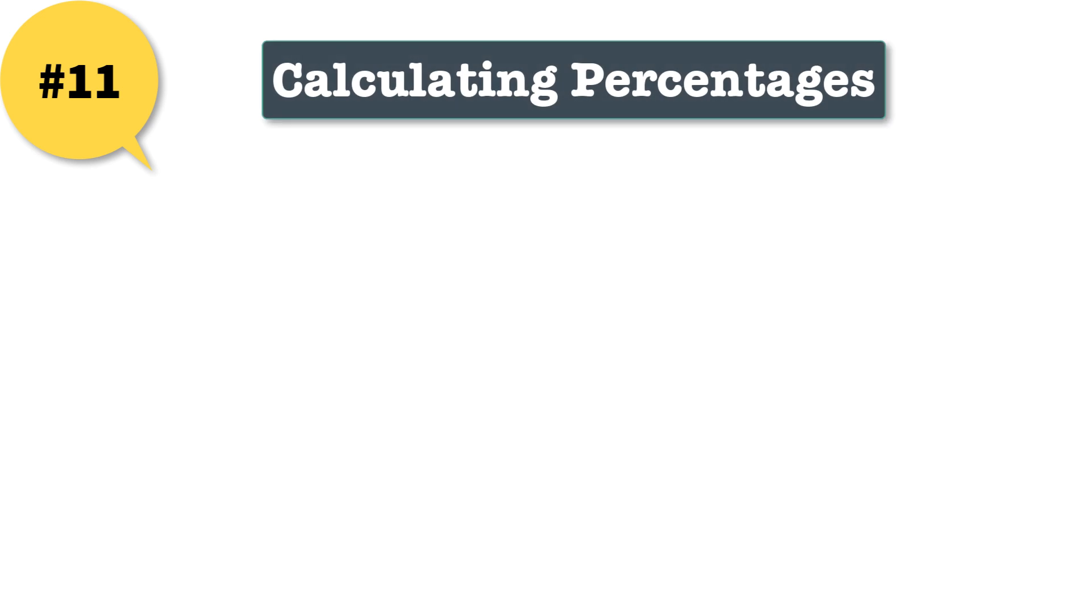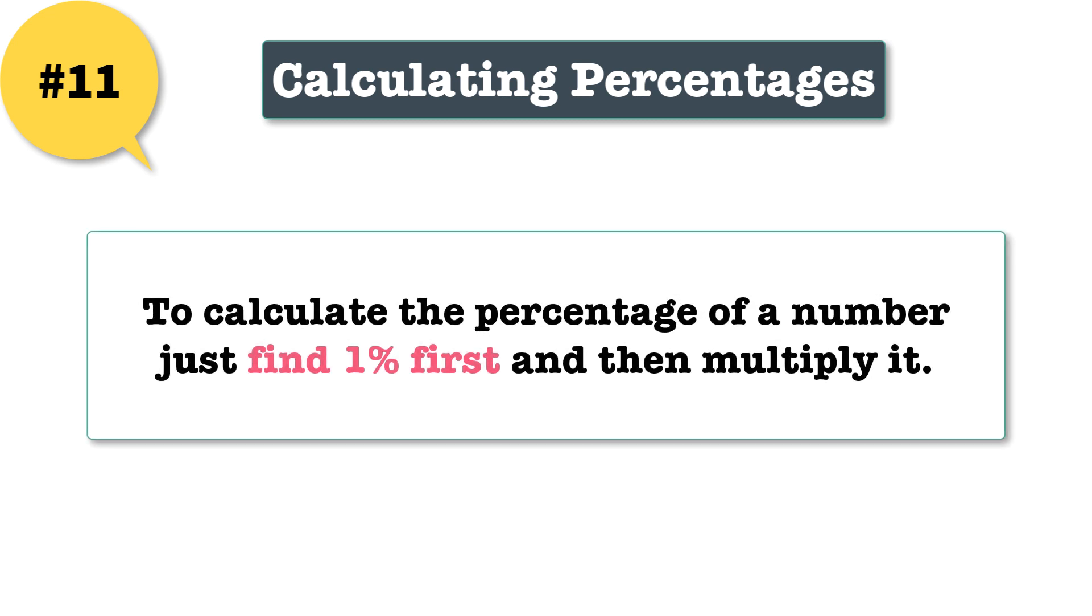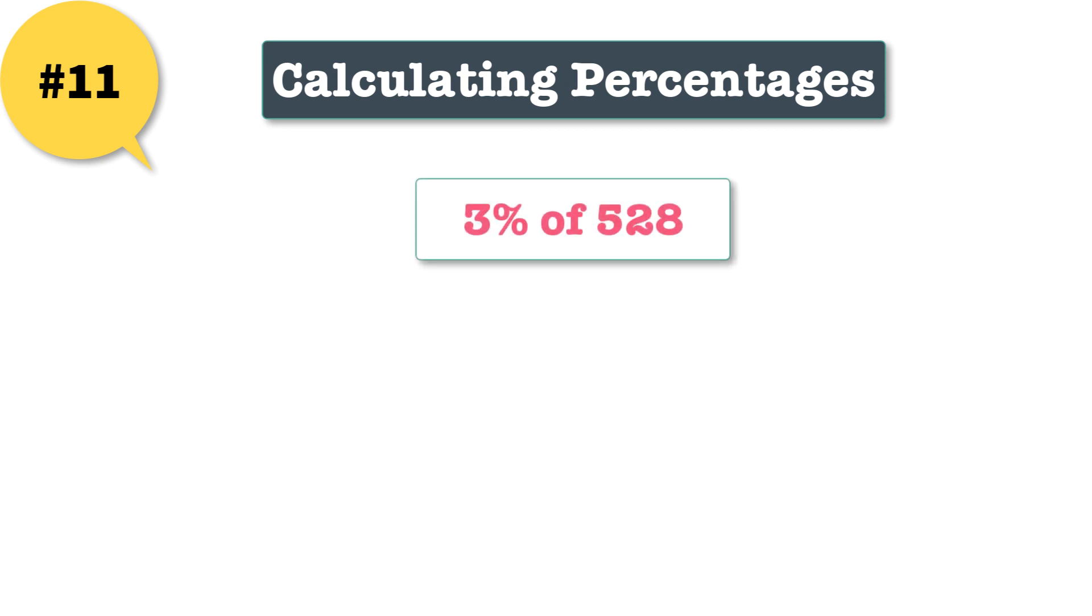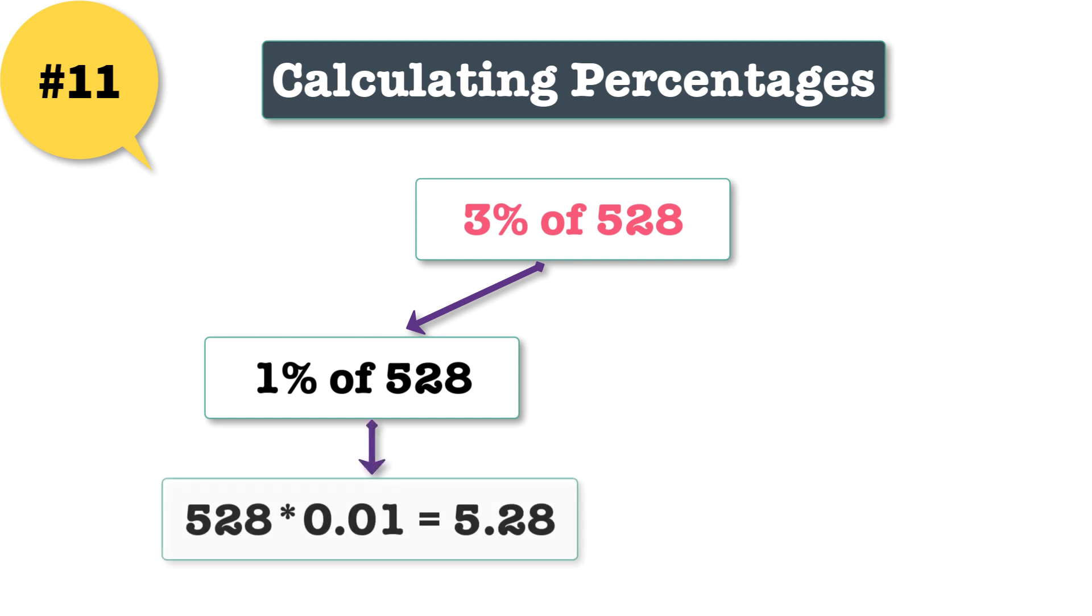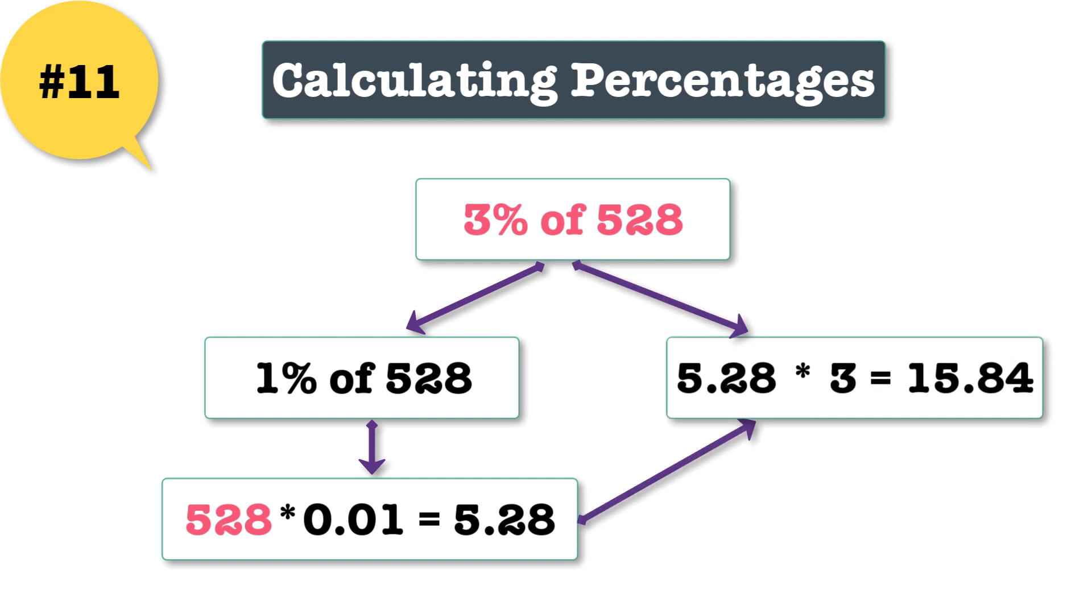11: calculating percentages. To calculate the percentage of a number, just find 1% first and then multiply it. So for example, to find 3% of 528, first find the 1% of 528. That would be 528 times 0.01 which equals 5.28, or just move the decimal two places left which will yield the 1% of number. Now just multiply by 3 to get 15.84 which is the solution. An easy trick to find the percentage of a number in less than 30 seconds.